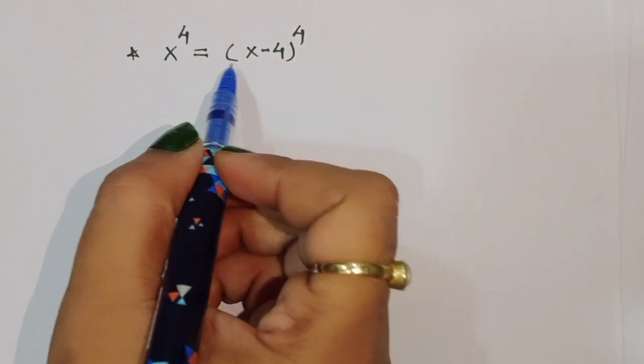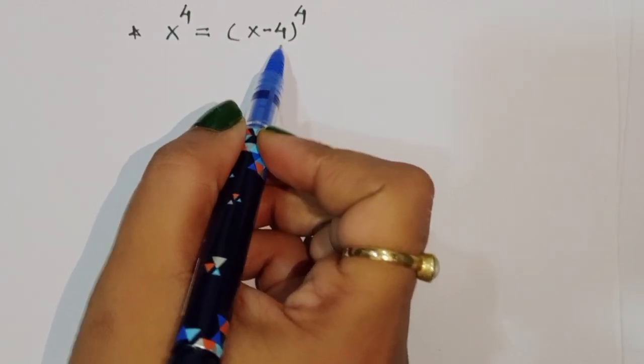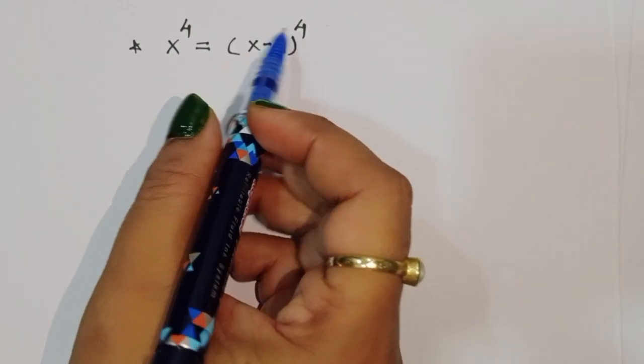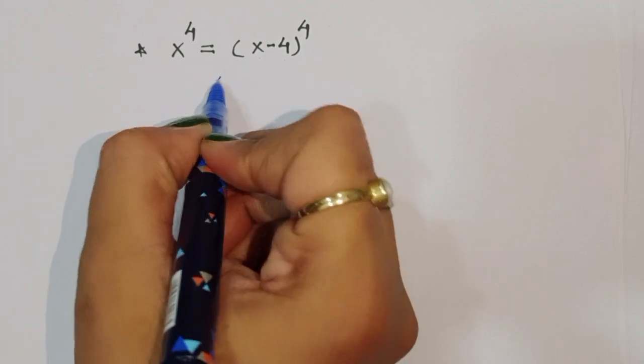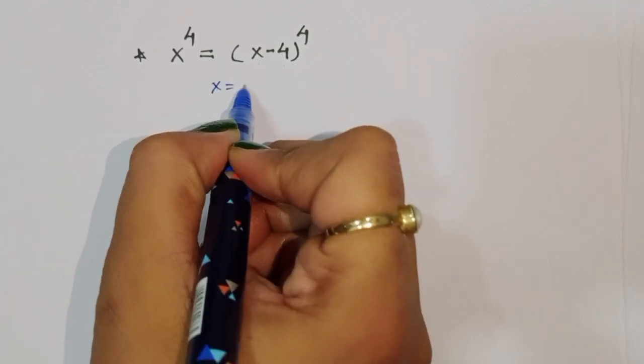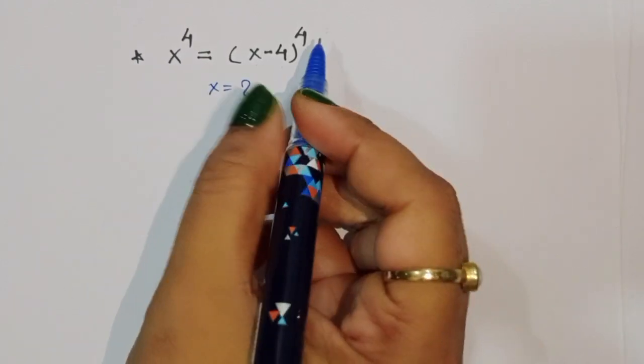x power 4 is equal to x minus 4 power 4. We have to find out the value of x. Here x is equal to what? Let's see the solution.